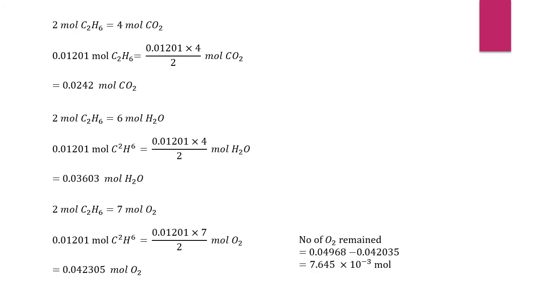Then we need to determine number of mol of CO2, H2O and O2. By using stoichiometry, we will get 0.0242 mol CO2, 0.03603 mol H2O, and number of O2 remaining is 0.04968 minus 0.042035. We will get 7.645 times 10 to the power of negative 3 mol.